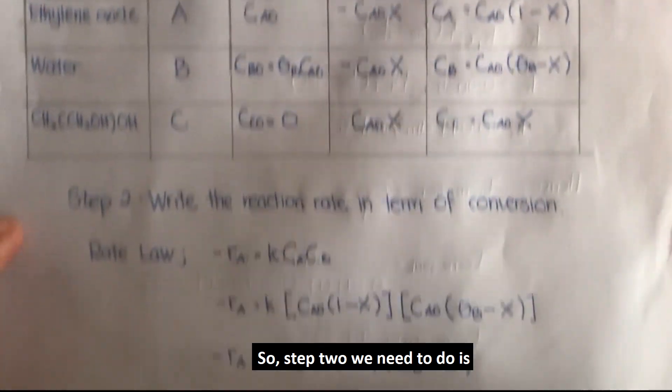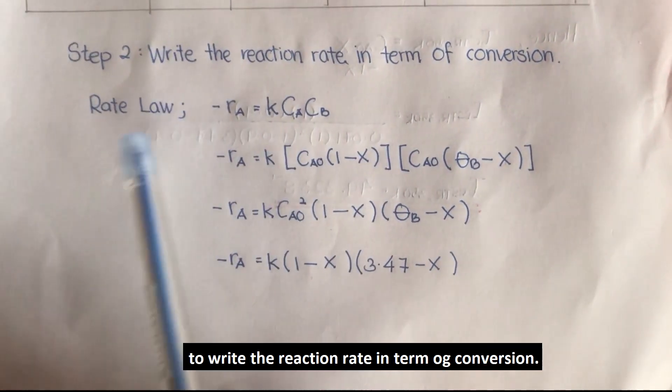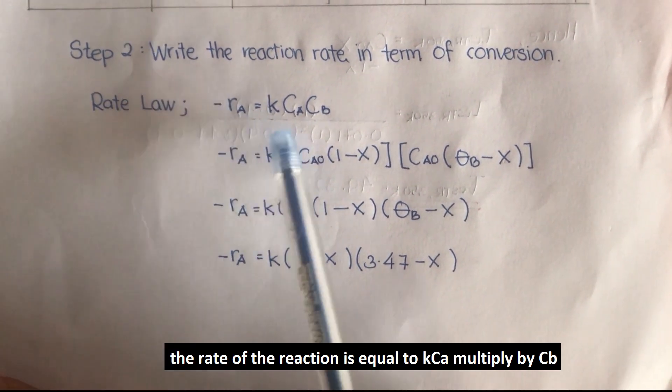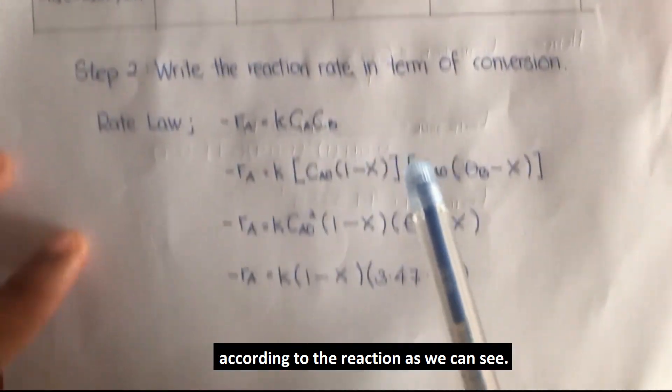Step 2, we need to write the reaction rate in terms of conversion. According to the elementary rate law, the rate of the reaction is equal to Ca multiplied by Cb according to the reaction.